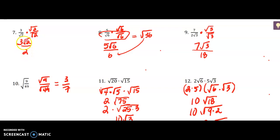You always want to check if these whole numbers can be simplified, but in this case they cannot. Same thing for number 8: I'm rationalizing by multiplying by the square root of 6 over the square root of 6, which gives me 5 square roots of 6 over 6. These two give me a product of the square root of 36, which then simplifies to 6.